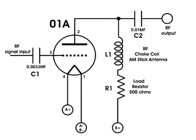The RF choke that I'm using is an AM stick antenna. And I added R1, which is a 500 ohm load resistor.